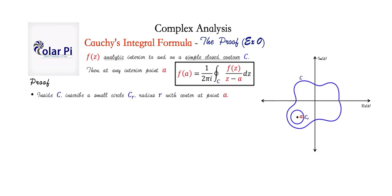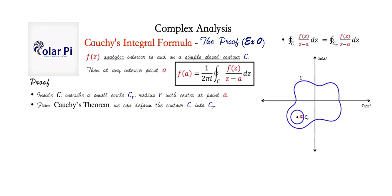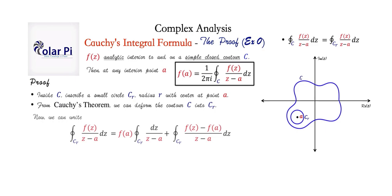Using the idea of the crosscut and applying Cauchy's theorem, we can claim that the integral over c is the same as the integral over c sub r. What maintains this equality is the idea of the crosscut and applying Cauchy's theorem once the crosscut is made. This means that instead of concerning ourselves with the integral over c, we can just worry about the integral over c sub r, since they're equal. And since c sub r is a circle, it's easy to work with.